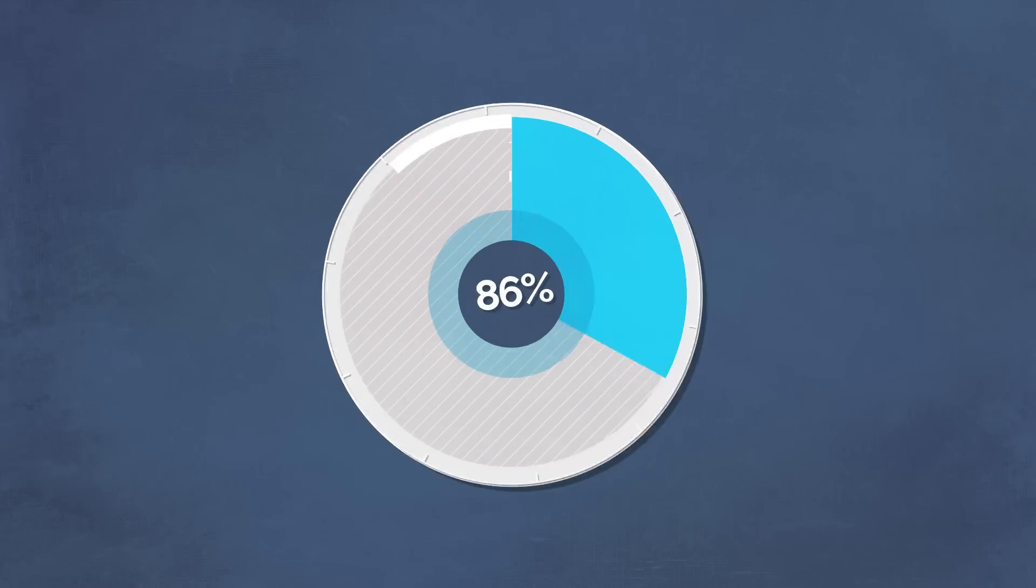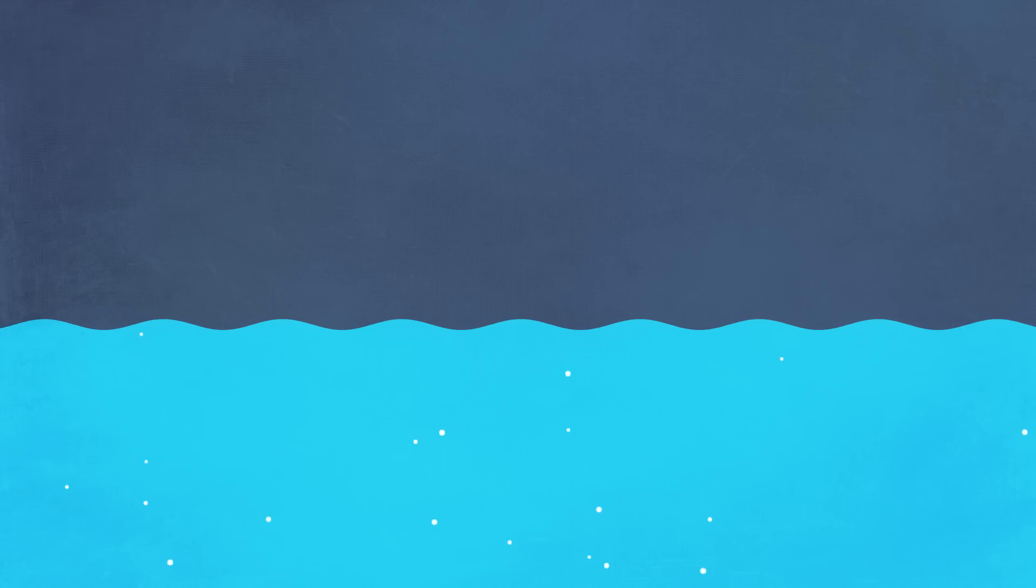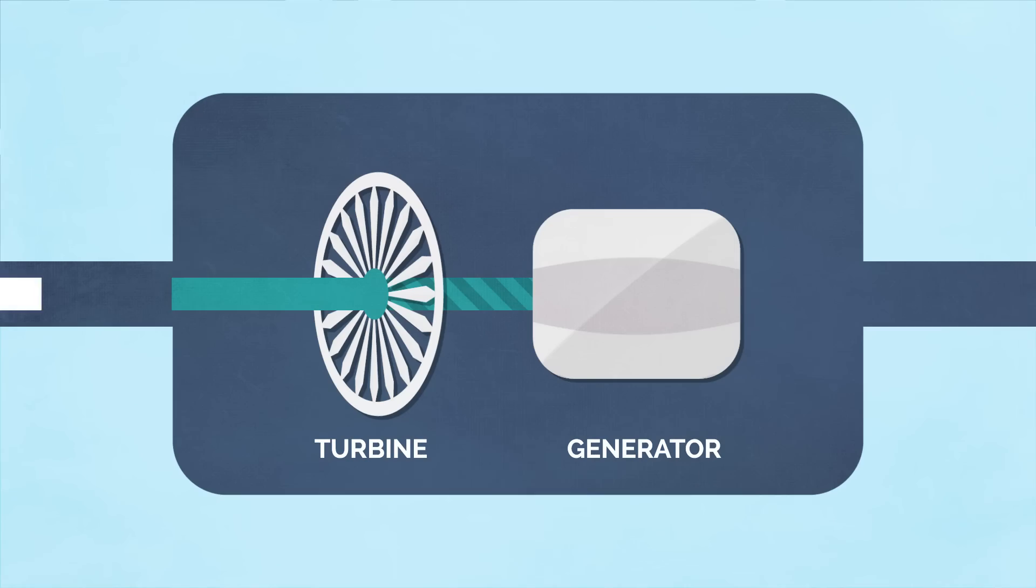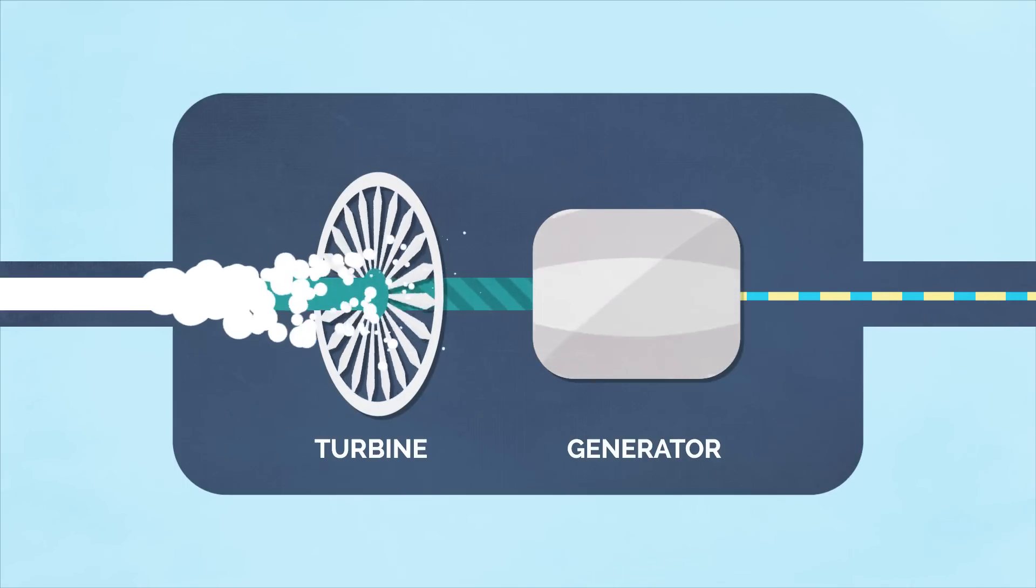In the U.S., 86% of our electricity comes from coal, natural gas, and nuclear power. These energy sources heat water in large boilers to create high-pressure steam. That steam pushes against a large turbine that rotates a generator, creating electrical current.